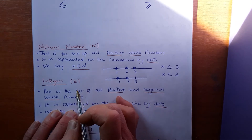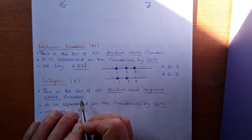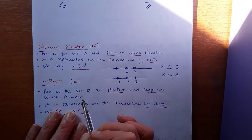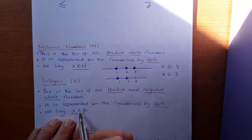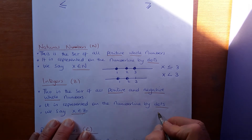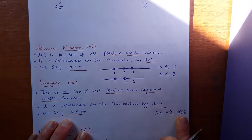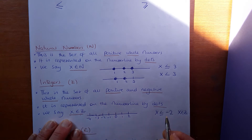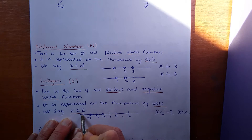The next set is integers. An integer is the set of all positive and negative whole numbers, so it includes minus numbers but not decimals or fractions — still whole numbers, so not minus 3.4 or 4.6. It's represented on the number line by dots and we say x is an element of Z for integers. If you had x less than or equal to minus two for integers, it could be minus two or smaller.